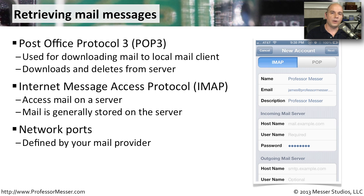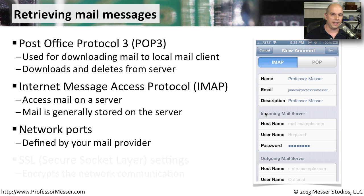To configure either POP3 or IMAP, you need to talk to your internet service provider. They're going to give you information about what the host names are for those devices, what username you should use to log into the mail server, what password you should be using. They'll also give you a listing of network port numbers, and different providers may be using different port numbers. You have to configure all of those things on your mobile device.